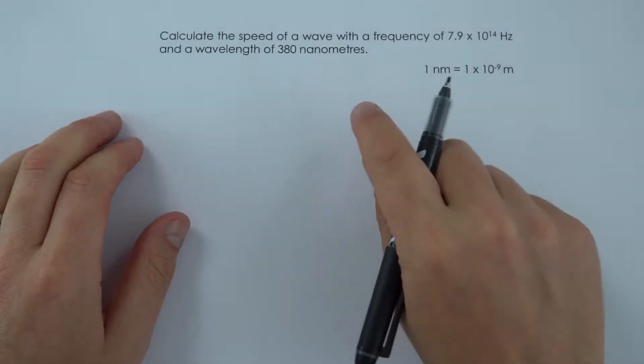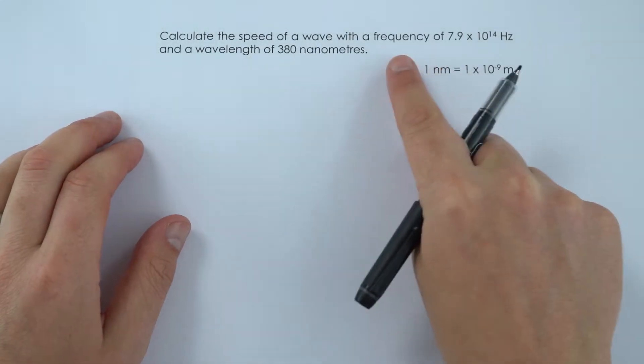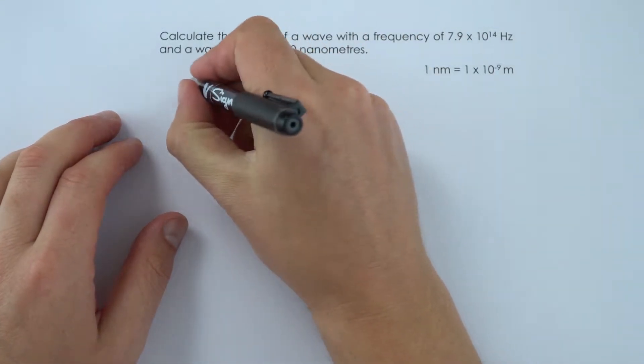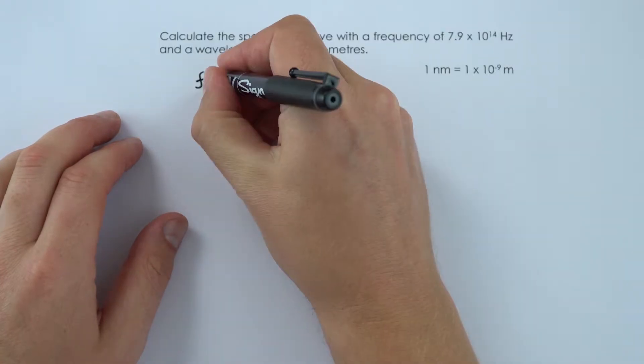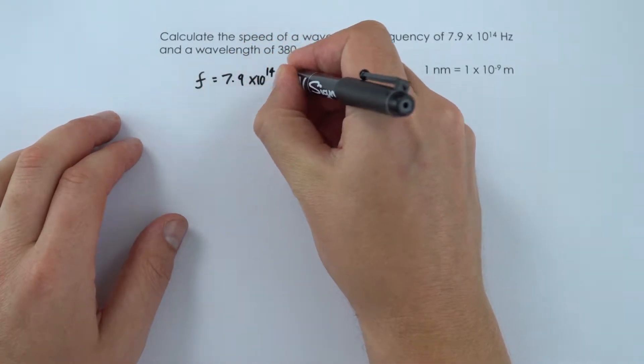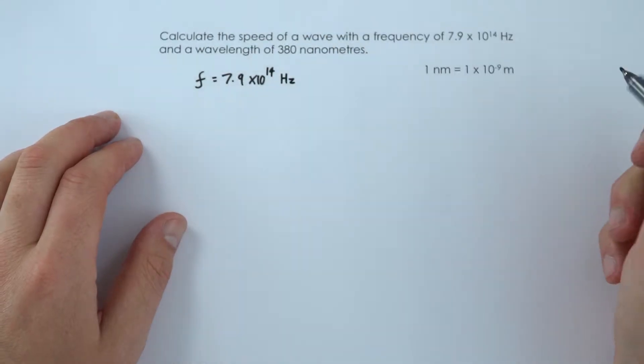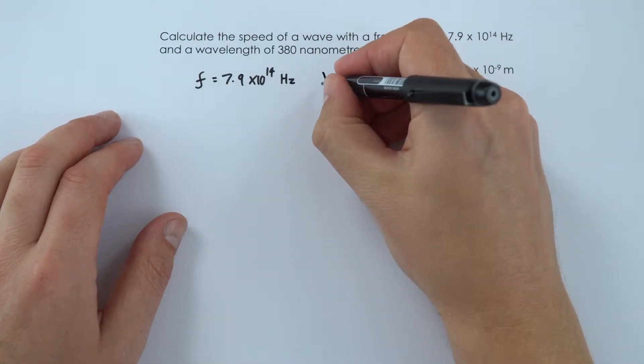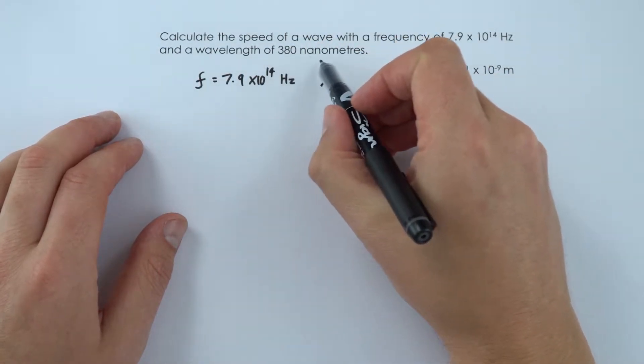So in this question we're looking to calculate the speed of a wave. Now it says we've got a frequency, so I'm just going to write that down. The frequency is equal to 7.9 times 10 to the 14 hertz, so that's a really high frequency wave, and it says the wavelength is equal to 380 nanometres.